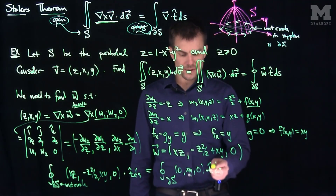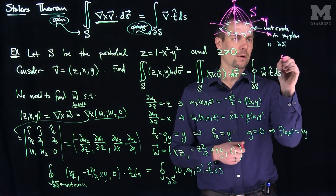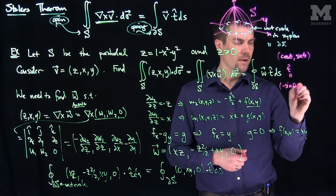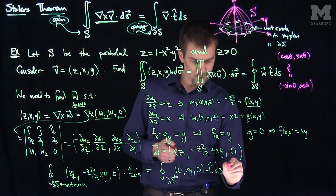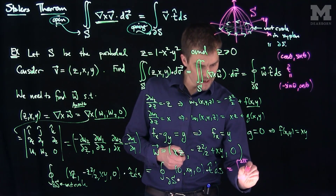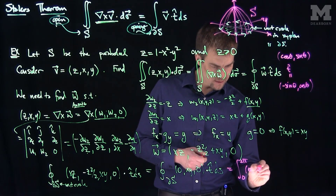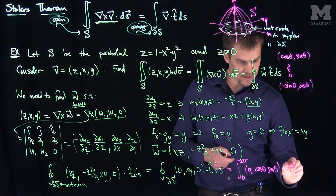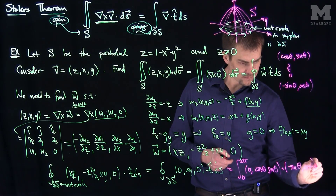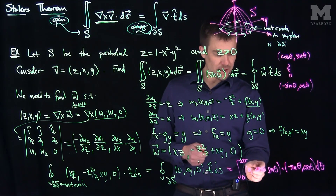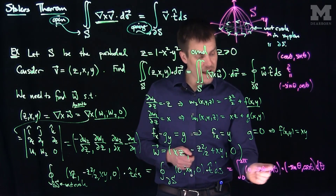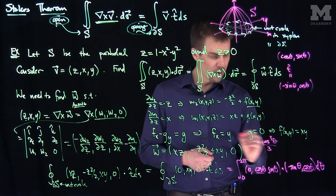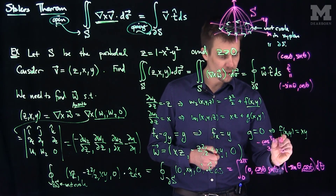We parametrize the unit circle as (cos θ, sin θ), so t-hat = (−sin θ, cos θ). The integral becomes the integral from 0 to 2π of (0, cos θ · sin θ) dotted with (−sin θ, cos θ) dθ. The dot product gives cos²θ · sin θ. Integrating cos²θ sin θ gives −cos³θ/3, evaluated from 0 to 2π, which equals zero since cos(2π) = cos(0).